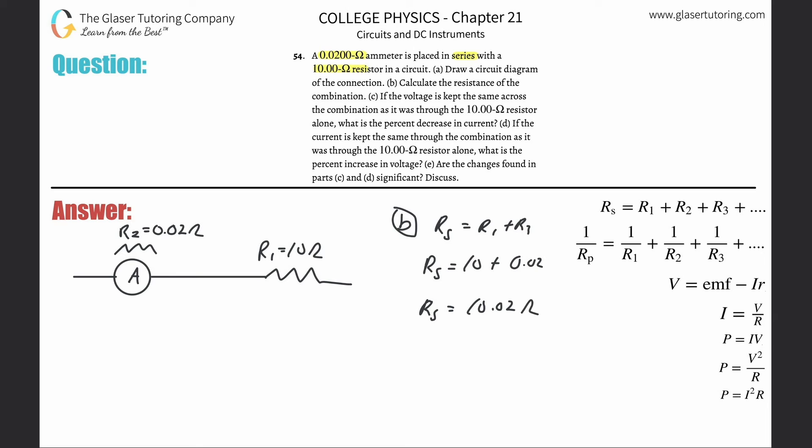Letter C: If the voltage is kept the same across the combination as it was through the 10 ohm resistor alone, what is the percent decrease in the current? You got to take this piece by piece. The voltage is kept the same means that the voltage alone without this ammeter should equal the voltage in series. Considering Ohm's law, V equals IR, so I can plug in: the current alone times the resistance alone must equal the current in series multiplied by the resistance in series.